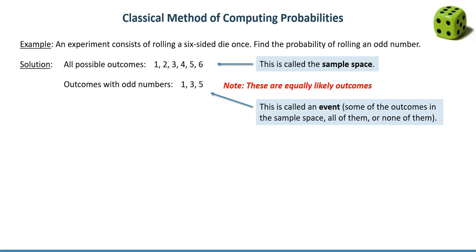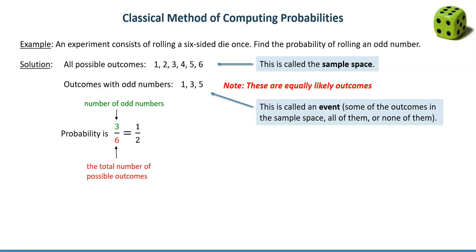So how do we find the probability of rolling an odd number? We're going to use a formula, but first let's look at the numbers for this specific example. To find probability, we set up a fraction. In the denominator we put the total number of all possible outcomes — there are six of them. In the numerator we put the number of odd numbers, or in other words, the number of desired outcomes. Our desired outcomes are one, three, and five — three of them. So that's three over six. Once we set up that fraction, we obtain the probability. Three over six simplifies to one over two, so that's the probability of that event.